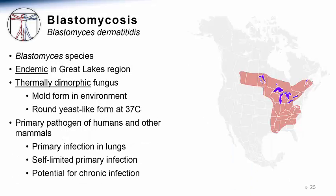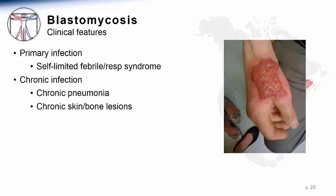A third endemic fungal infection is blastomycosis, caused by the fungus Blastomyces dermatitidis. The region of highest endemicity is somewhat overlapping with that of histoplasmosis; however, the region has shifted a bit further north, encompassing the areas around the Great Lakes region and southern Canada. As a thermally dimorphic fungus, this organism grows in the environment as a mold and in a round form in patients. Similar to the other infections, it has a primary respiratory site of inoculation where it causes the first infection with the potential for chronicity.